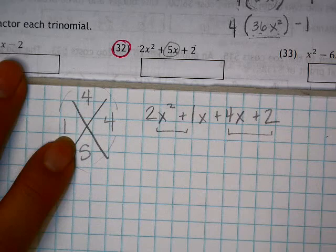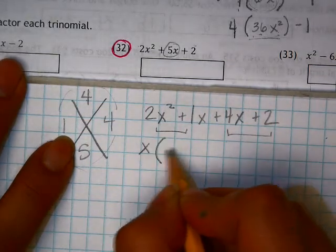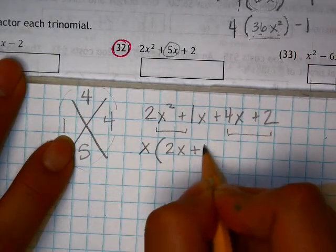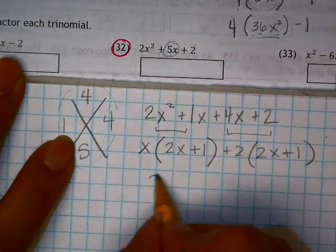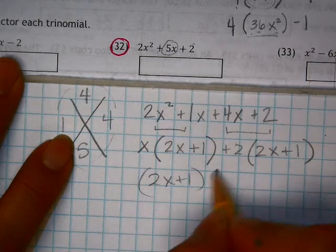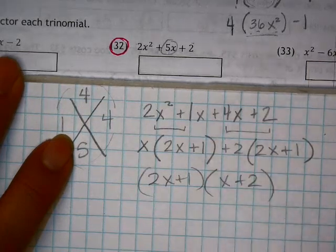And then I'm going to factor by grouping, kind of find out what's common in both of these. And you end up getting 2x plus 1 times x plus 2 as your factors.